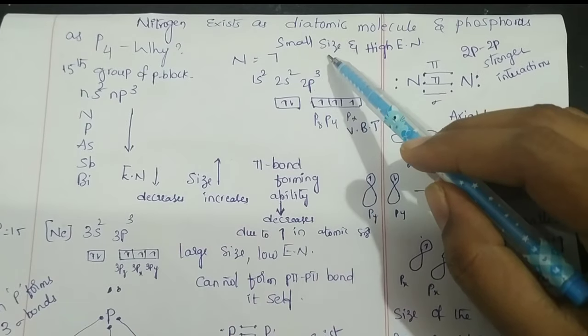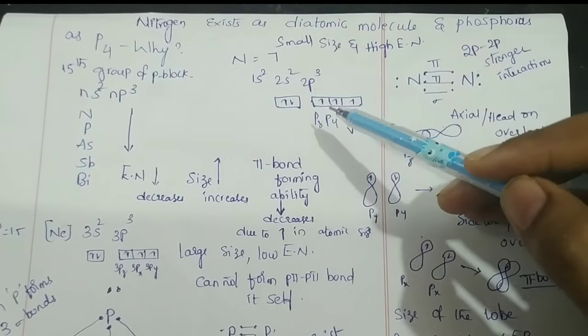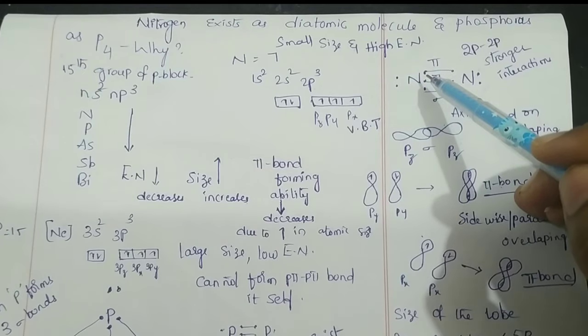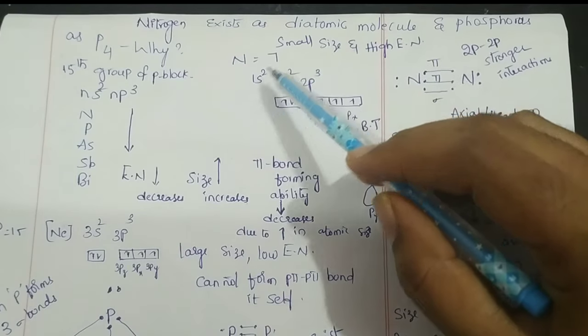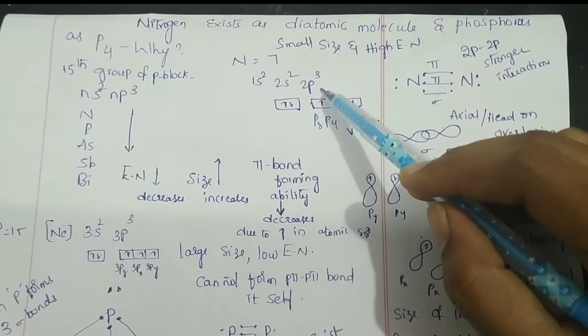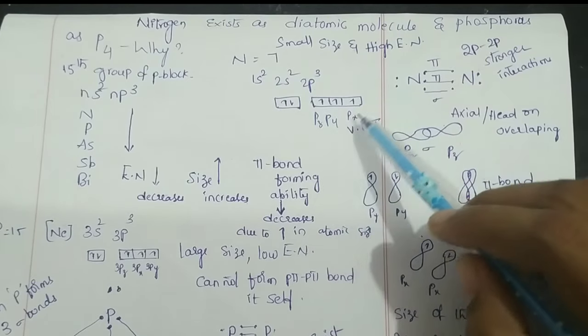The Lewis dot structure of nitrogen represents electrons in the form of dots. Nitrogen atomic number is 7, with electronic configuration 1s² 2s² 2p³. Nitrogen has 5 electrons in the valence shell.